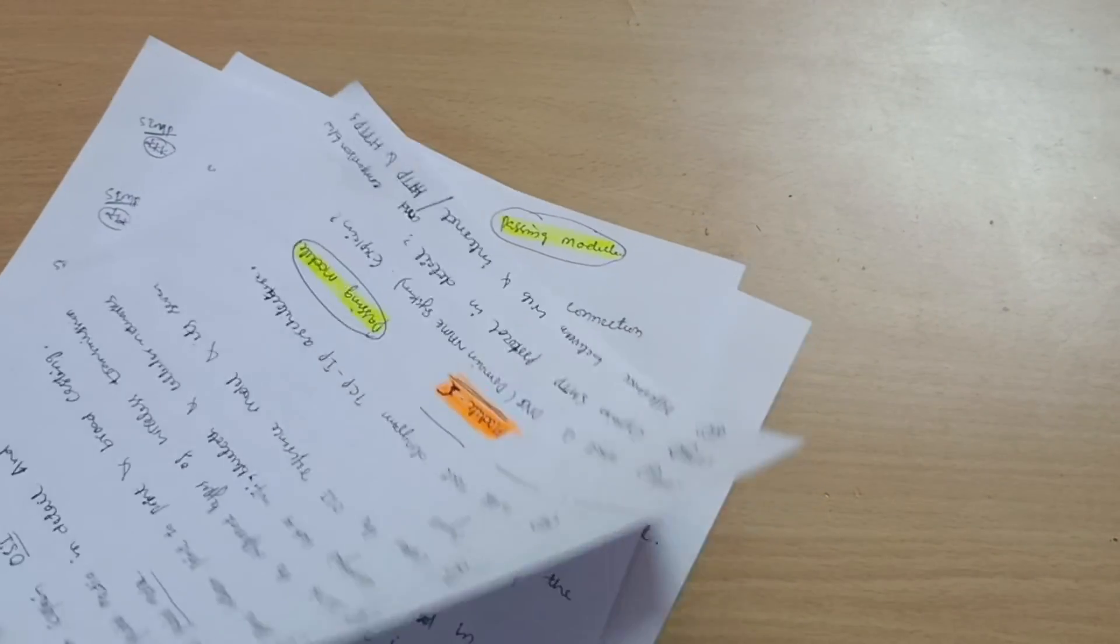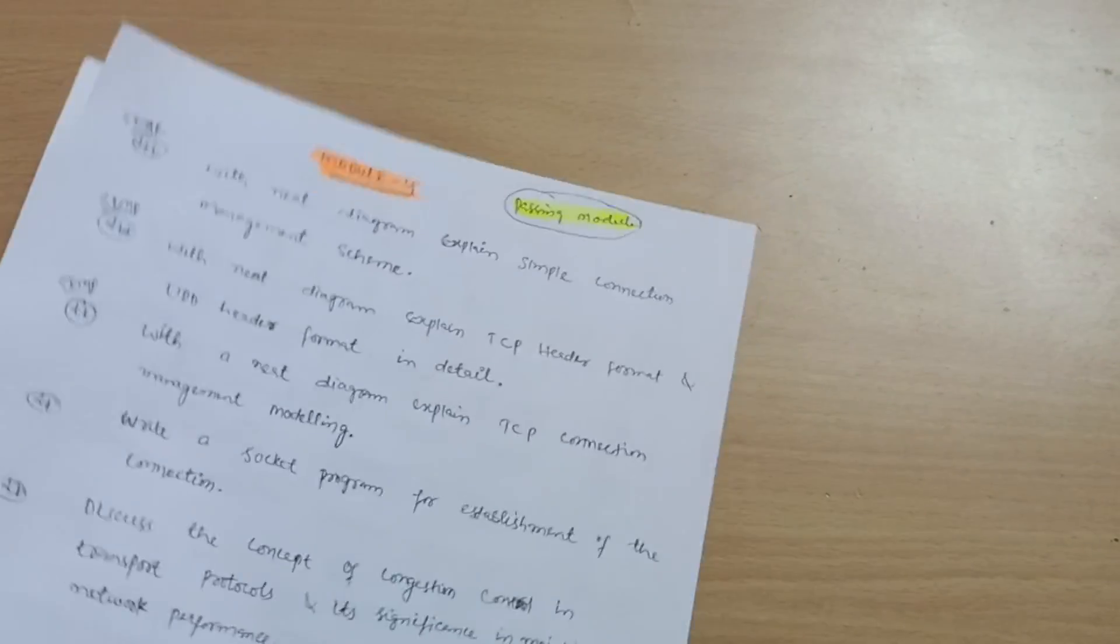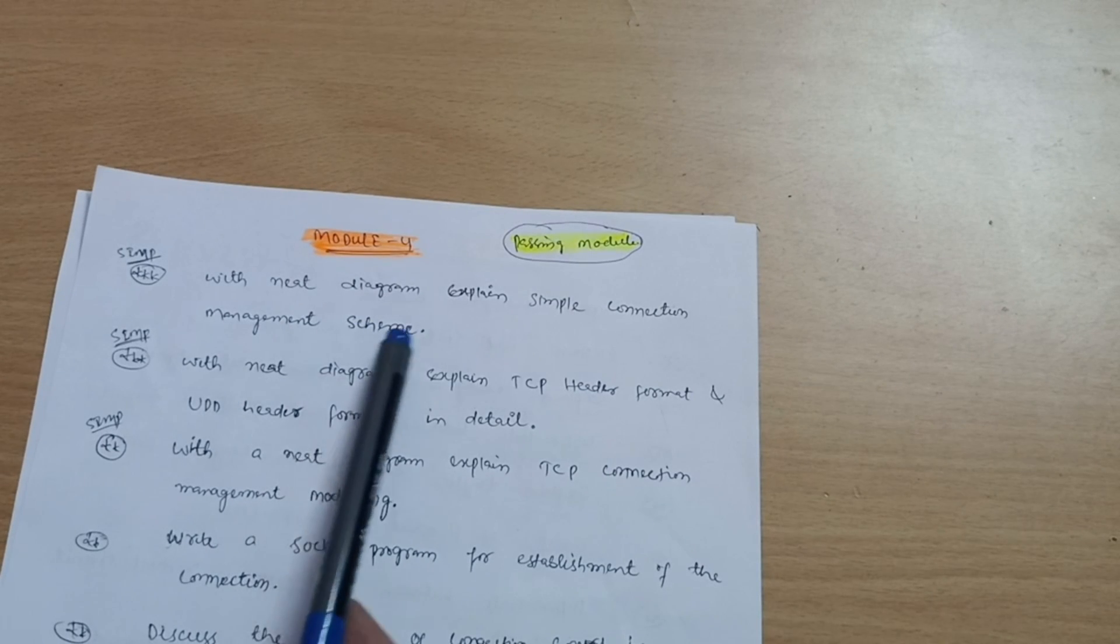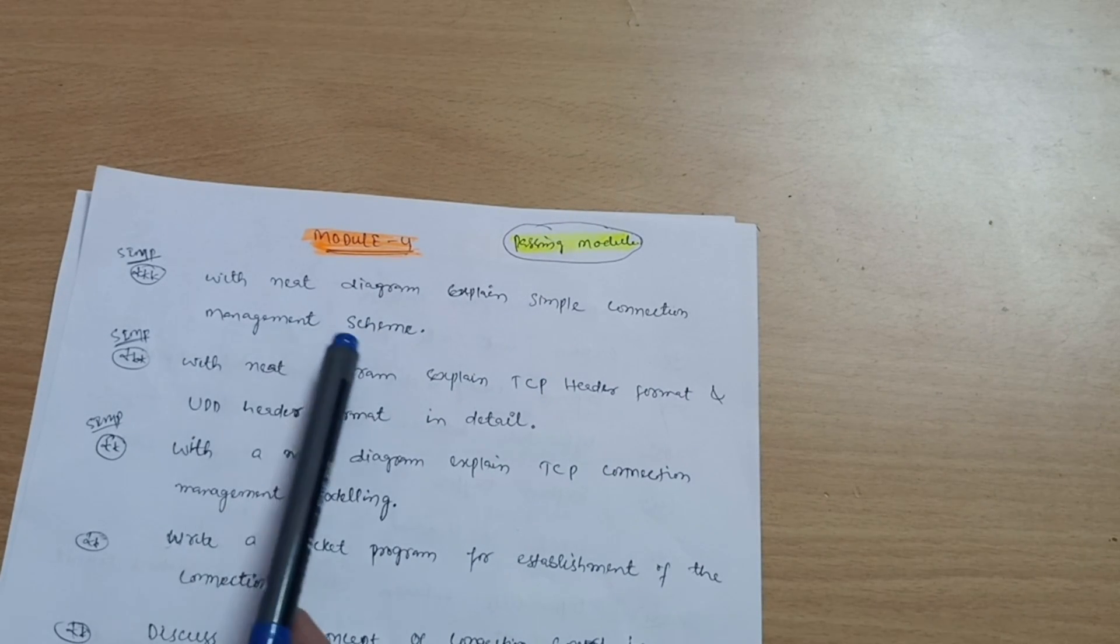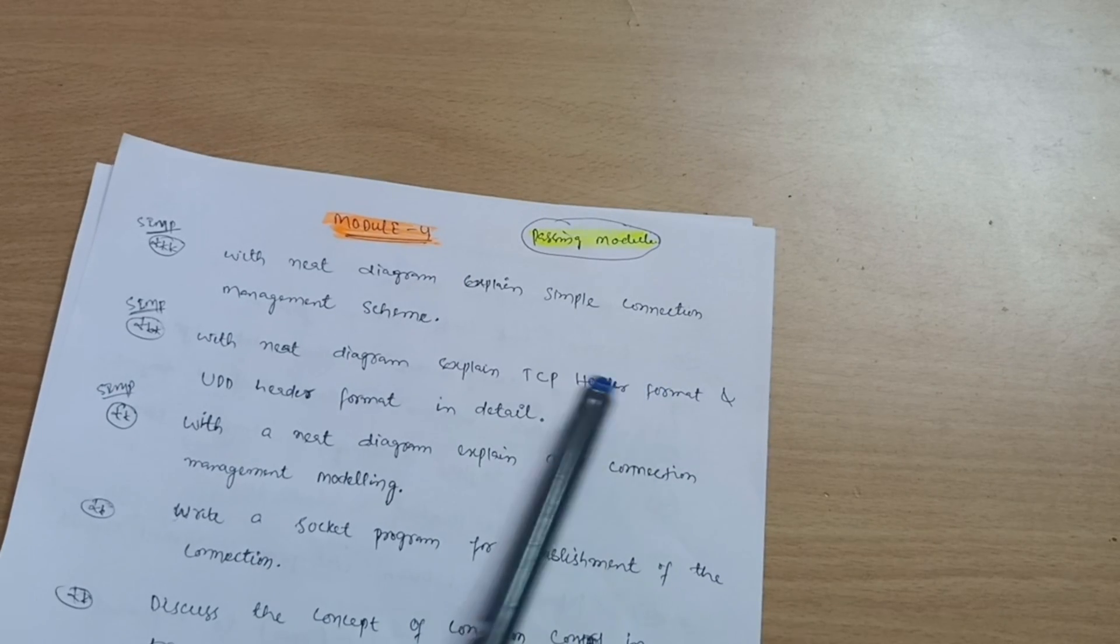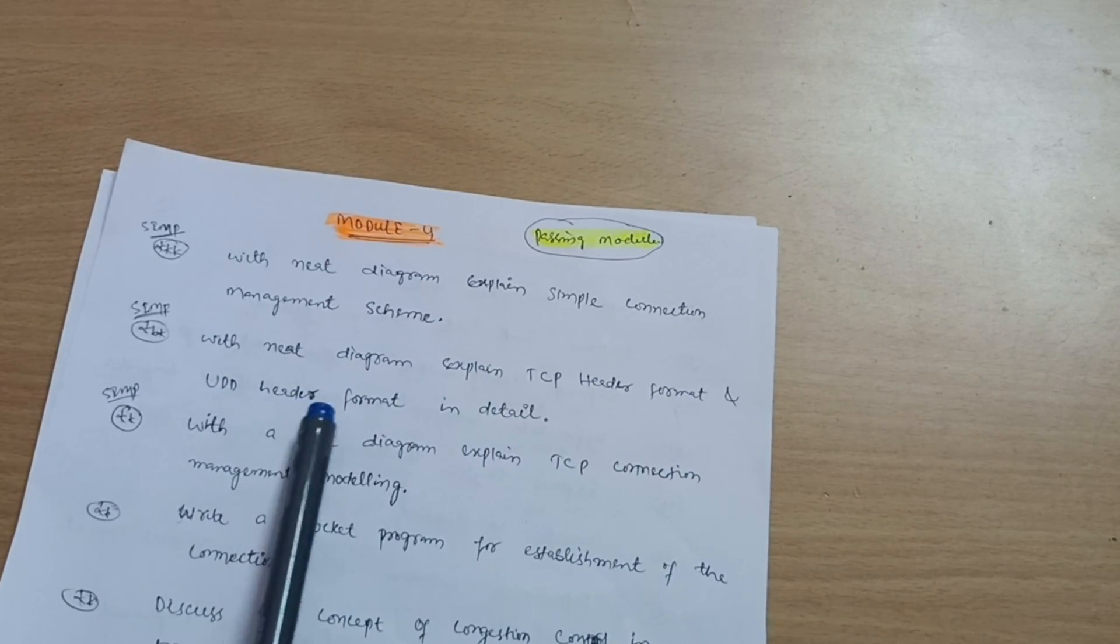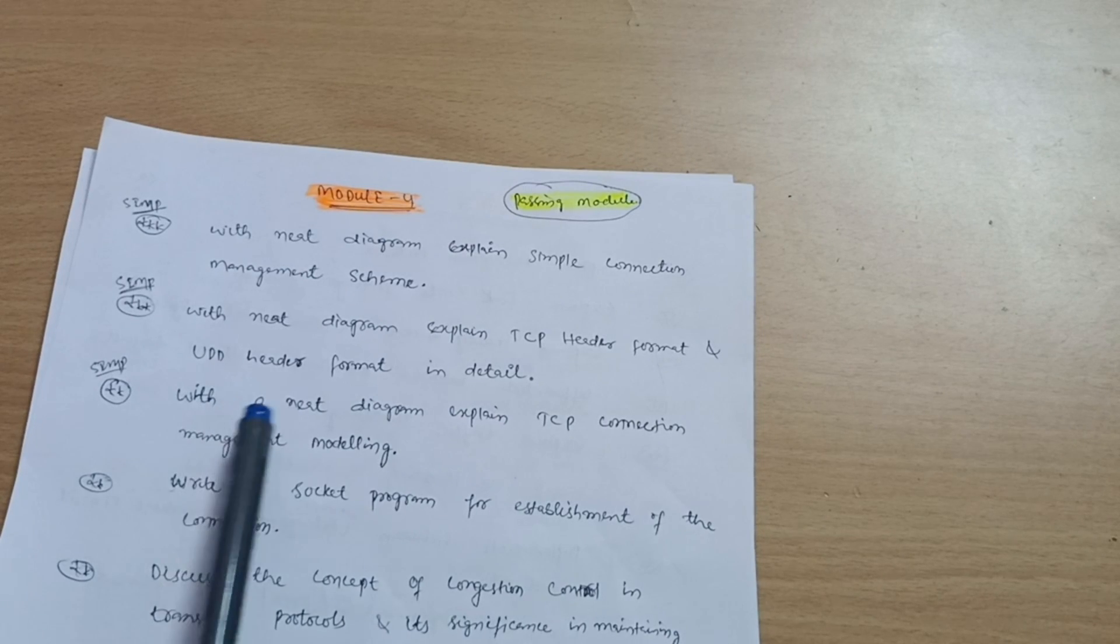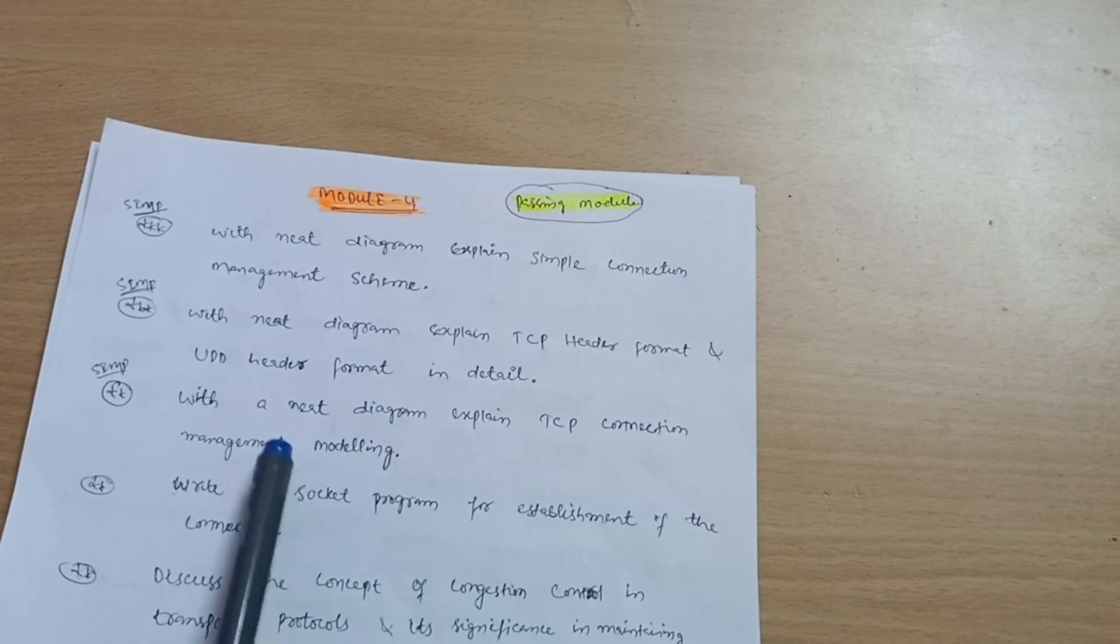Module 4 is again a passing module. Questions include: With a neat diagram, explain simple connection management scheme. With a neat diagram, explain TCP header format and UDP header format in detail. With a neat diagram, explain TCP connection management - this is a super important question.